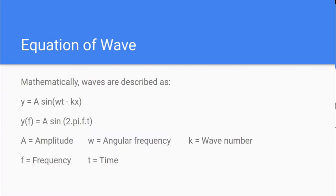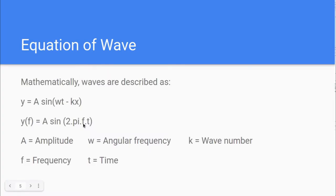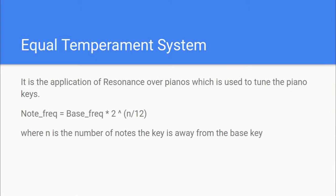If we neglect the displacement factor, the equation becomes y = A·sin(ωt). Since omega is 2π times frequency, our equation as a function of only frequency becomes y(f) = A·sin(2π·f·t). In physics we keep frequency constant and time as a variable, but here we'll be dealing with multiple keys, so frequency will be the variable and time will be constant. A is amplitude.